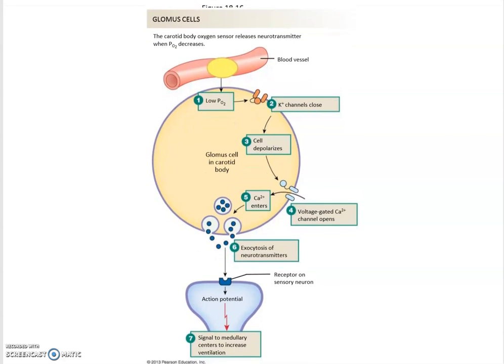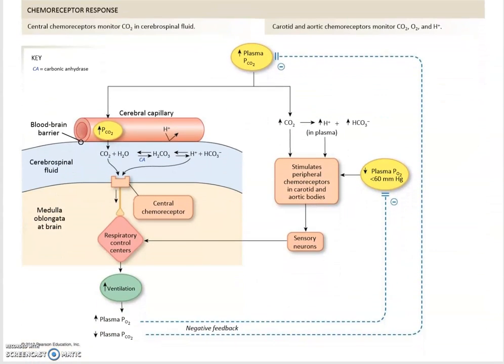Here would be some more regulation—this is about the glomus cells and the carotid bodies. Honestly, I think we should skip over this because you're not being tested on this, so you can take a look at this at your leisure, but this is not important as far as the test is concerned.